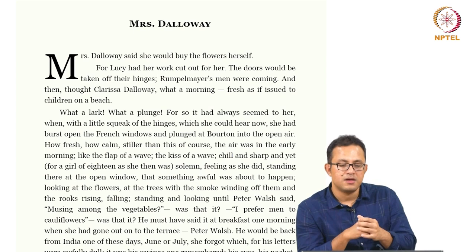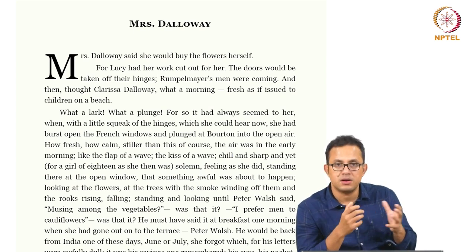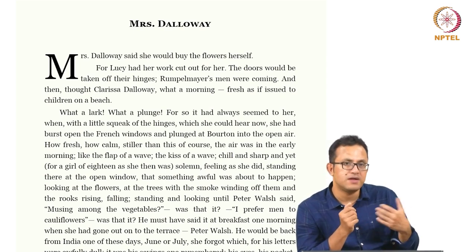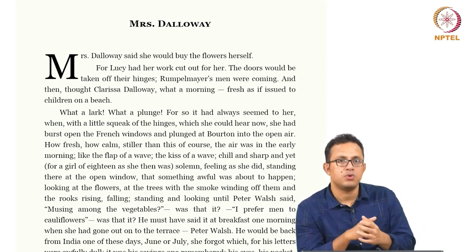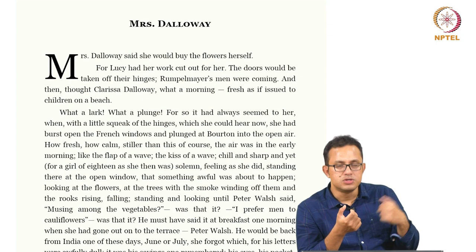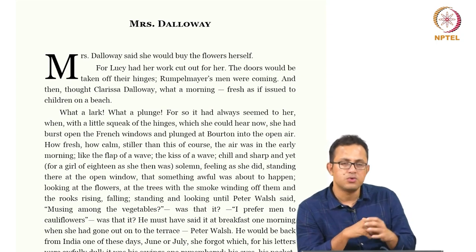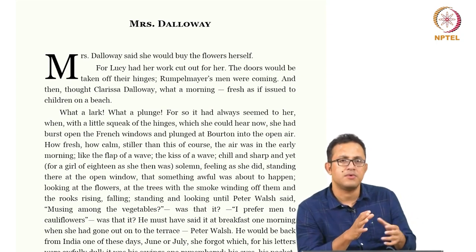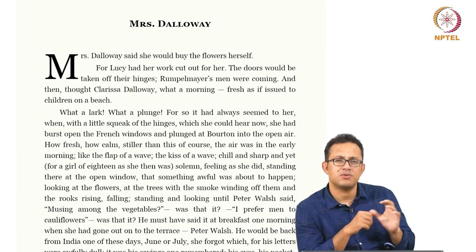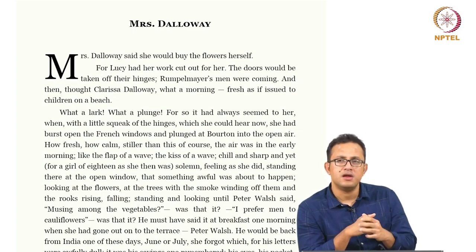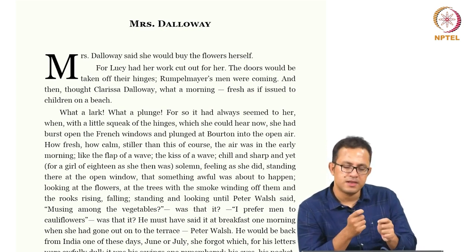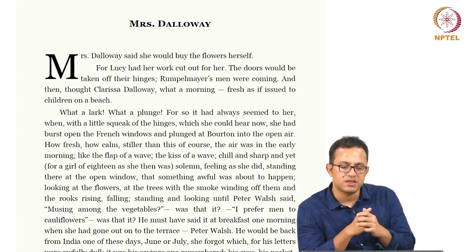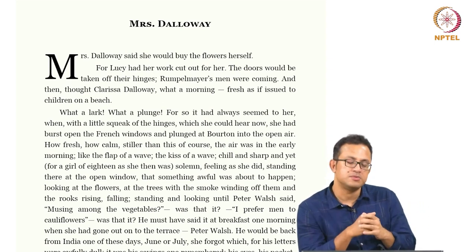Similarly, Septimus too has a degree of masculinity crisis. He shifts from being a war hero — someone who has been to the war, suffered it, and fought it — to a situation where he is so nervous, so shivering and hysterical all the time, that he is almost shamed by the doctors who treat him. The whole notion of hysteria is important, and this is where the two characters — Mrs. Dalloway and Septimus — really come into close proximity.